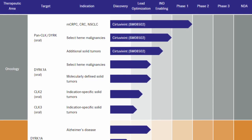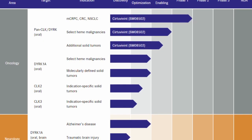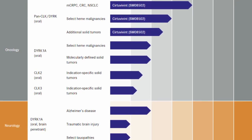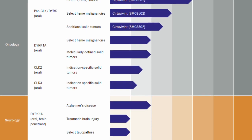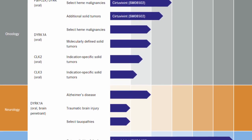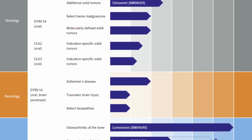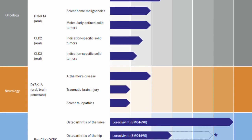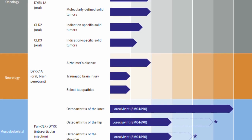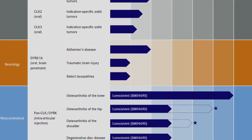BioSplice has launched lorecivivint for the treatment of knee osteoarthritis. Another drug, dalosavate, is intended to treat androgenic alopecia, a form of hair loss. An earlier trial led to a statistically significant increase in total follicle count versus placebo. There are a huge number of drugs entering clinical trials. If you want to look at any of them, I direct you towards the rejuvenation roadmap. It will be very interesting to see where we can go from here.